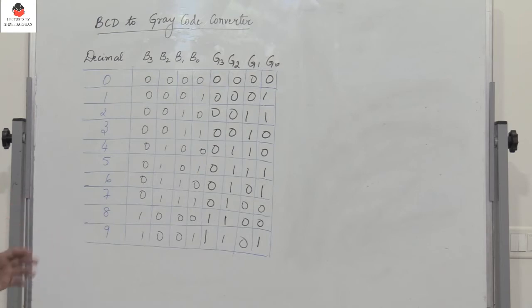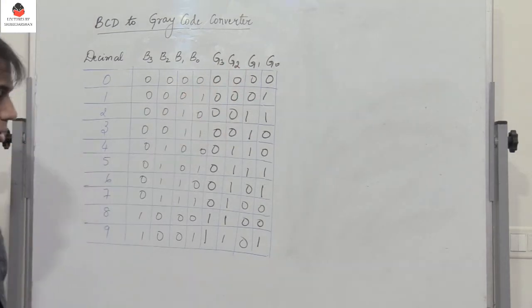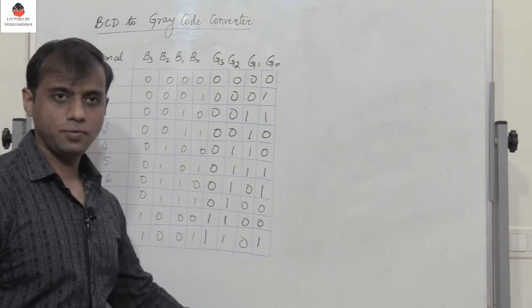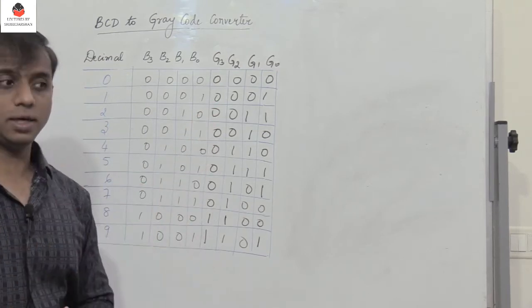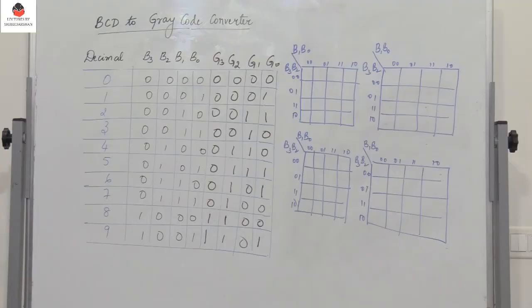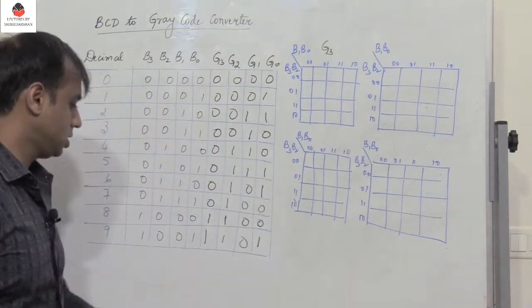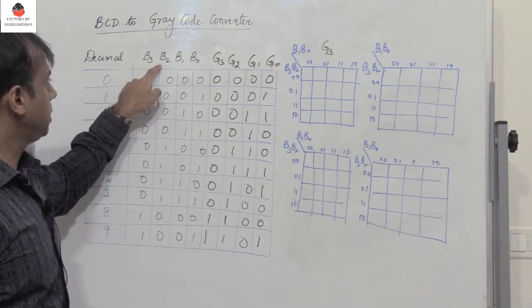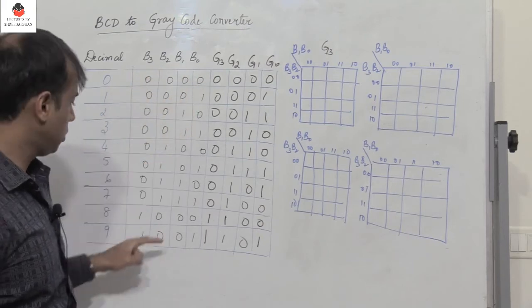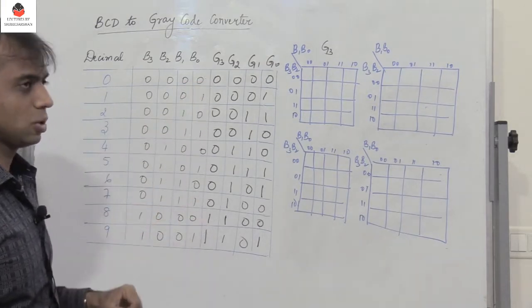To design the BCD to gray code converter, I need the most simplified expressions to implement G3, G2, G1, and G0. We will use a 4-variable K-map to simplify and get the most simplified expressions. Let's find the most simplified expression for G3 by putting the values in the K-map, with B3 B2 B1 B0 varying from 0000 to 1001, with the output defined by column G3.